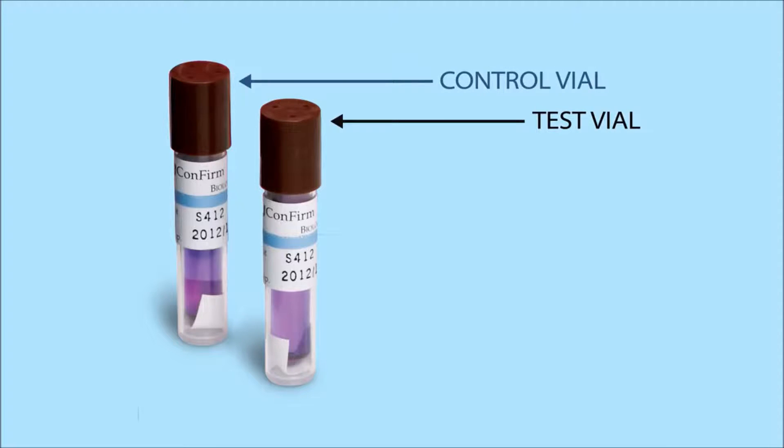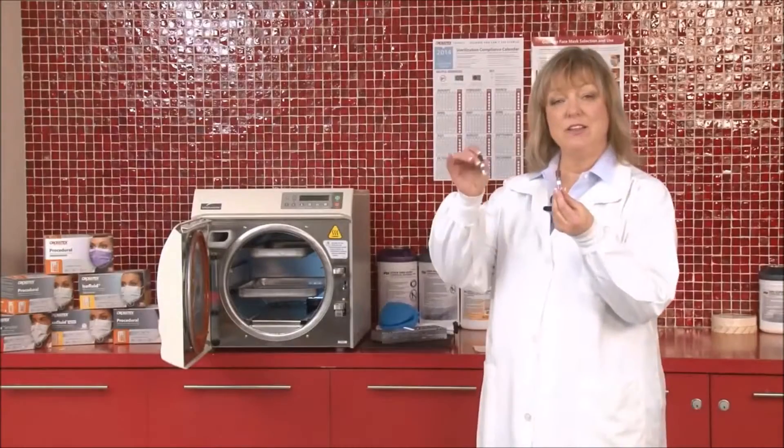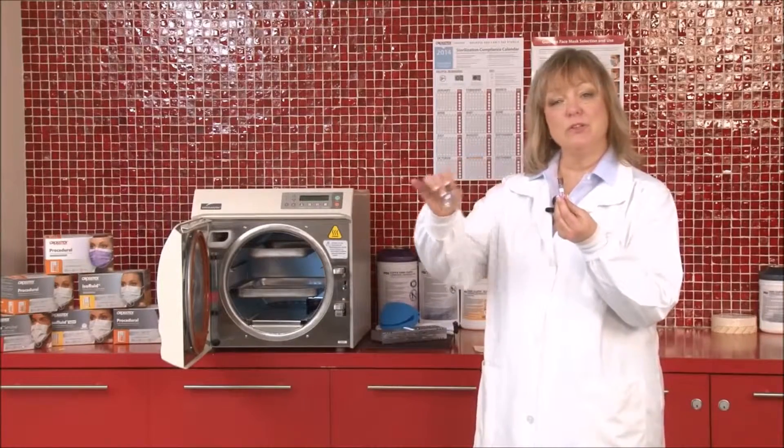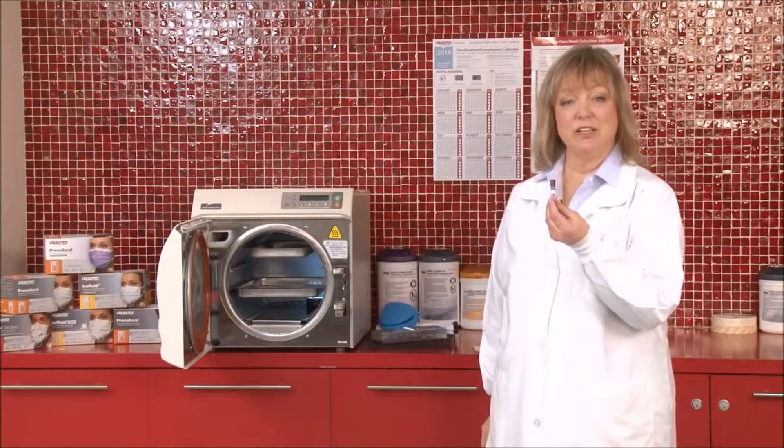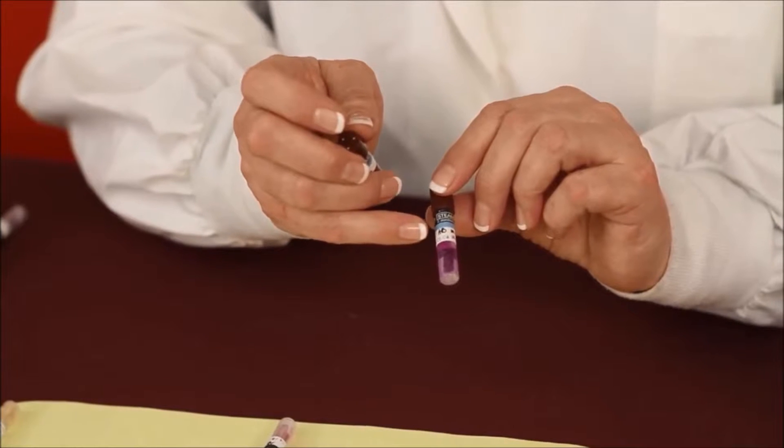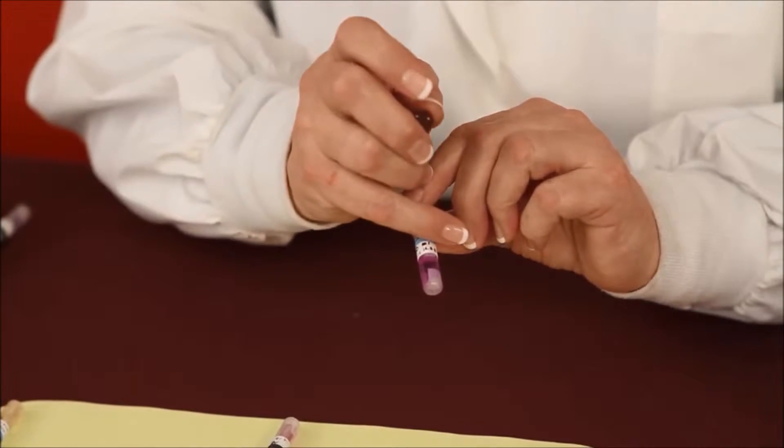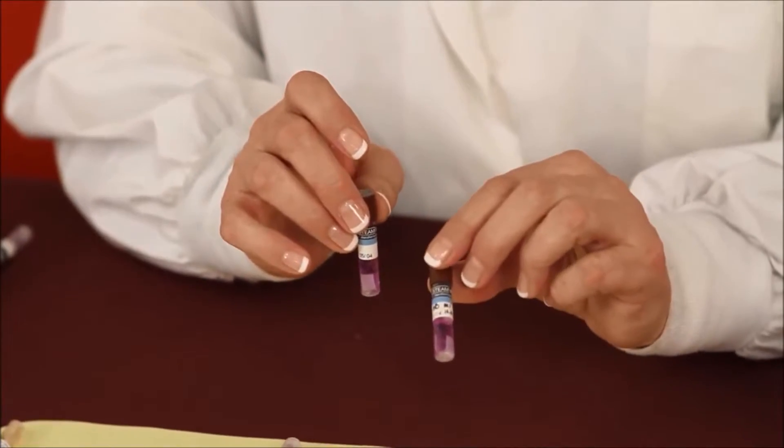One of the vials is going to actually be placed into the sterilizer as your test. The other one is going to be your control. So this one will not be placed into the sterilizer. It's important that you write certain information so that you can identify the brand of the sterilizer, the run of the day, the date, and the operator's initials.